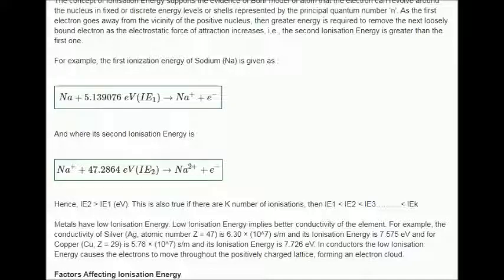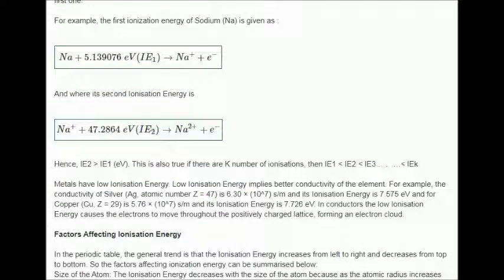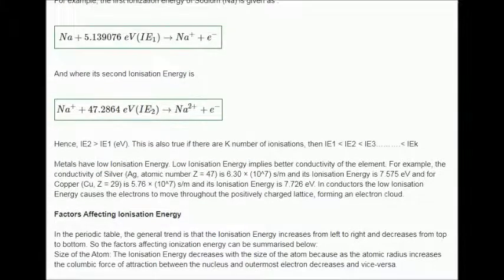And for copper (Cu, z equals 29), is 5.76 times 10 to the power of 7 s per meter and its ionization energy is 7.726 electron volts. In conductors, the low ionization energy causes the electrons to move throughout the positively charged lattice, forming an electron cloud.